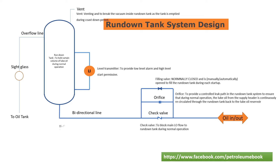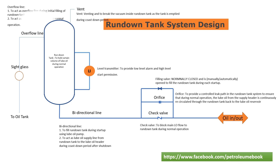The bi-directional line is used to fill the rundown tank during startup using the lube oil pump, and to act as the lube oil supply line from the rundown tank to the lube oil header during the coast down period after shutdown. The overflow recirculation line acts as an overflow line during initial filling of the rundown tank, and as a recirculation line during normal operation.